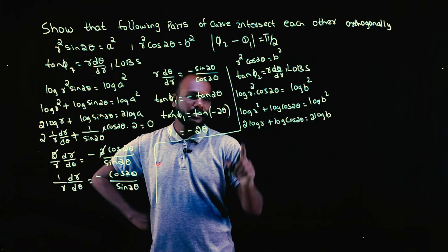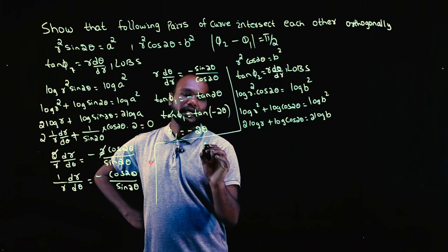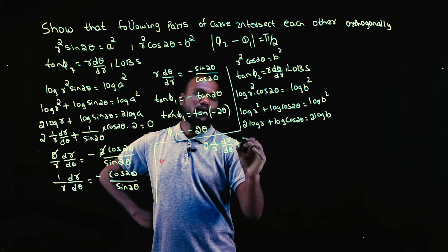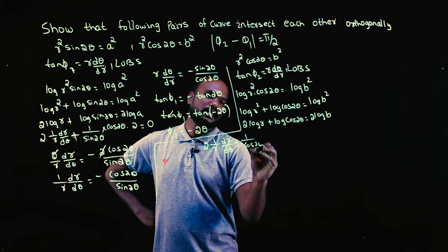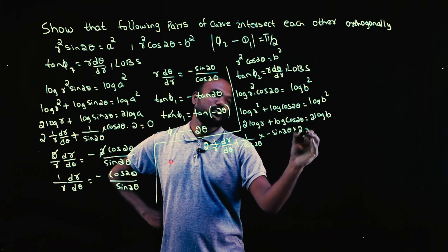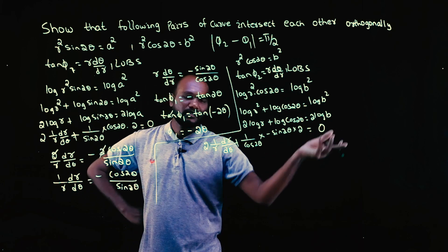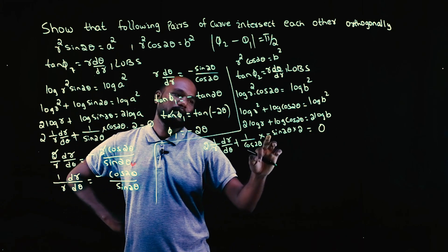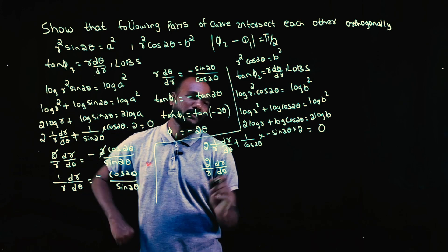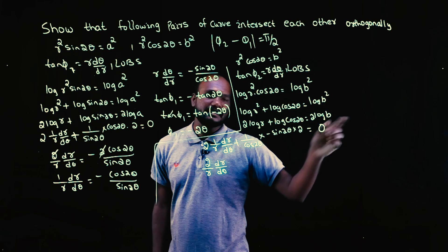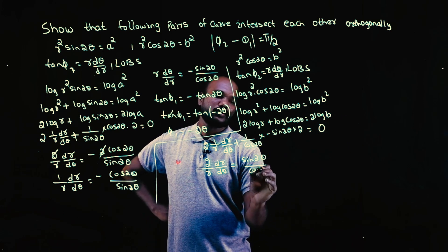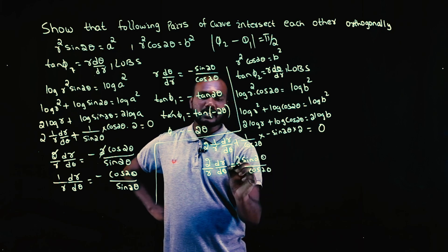Now what I need to do? I need to differentiate. 2, I'll keep it as it is. Log r differentiation is 1 by r dr by dθ plus log cos 2θ differentiation is 1 by cos 2θ times minus sin 2θ times 2 is equal to 0. There's a plus here, if I sign that will become minus, but there is also minus here. Plus into minus is minus, so I can just take 2 by r dr by dθ minus into minus is plus, so sin 2θ divided by cos 2θ, 2 is here.